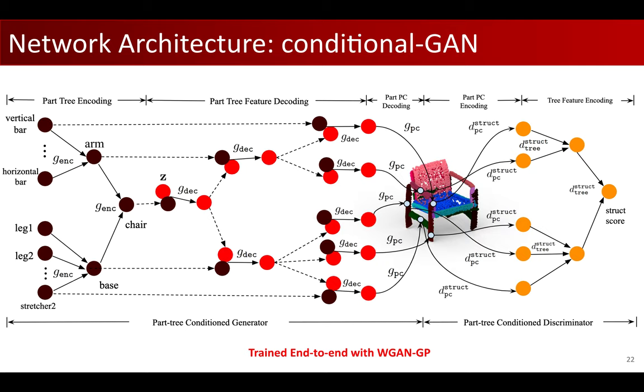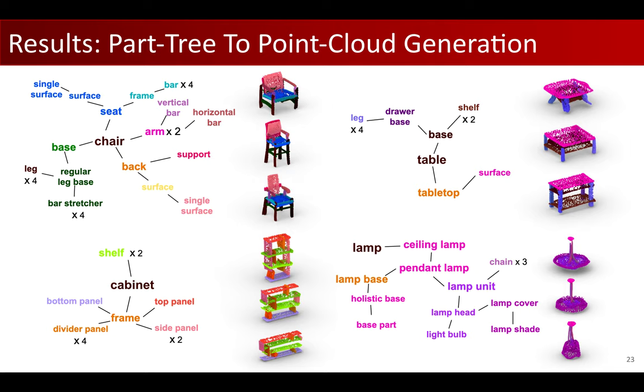The entire conditional GAN is trained end-to-end using the standard framework of Wasserstein GAN with gradient penalty, WGAN-GP. Our approach demonstrates state-of-the-art performance on four biggest categories in the PartNet dataset for the PT2PC task. Here, we show one example for each object category.